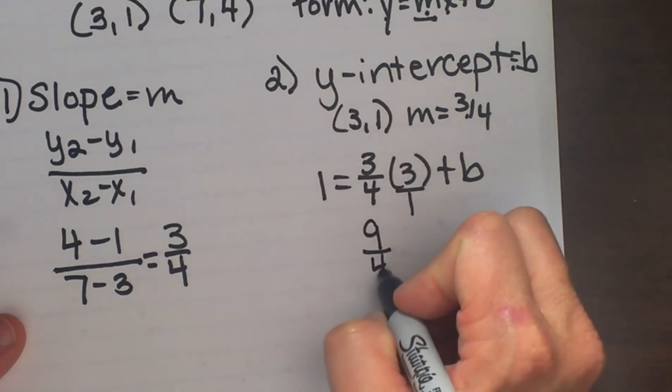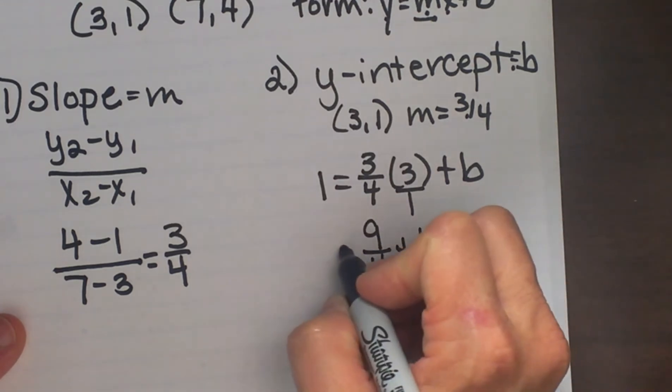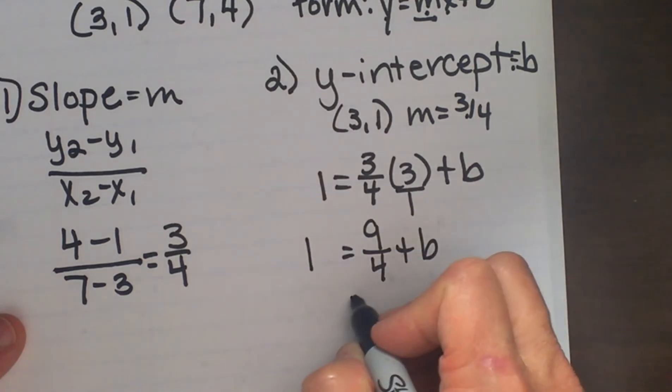So that gives me 9/4 plus b equals 1, and then I have to subtract 9/4 from both sides.